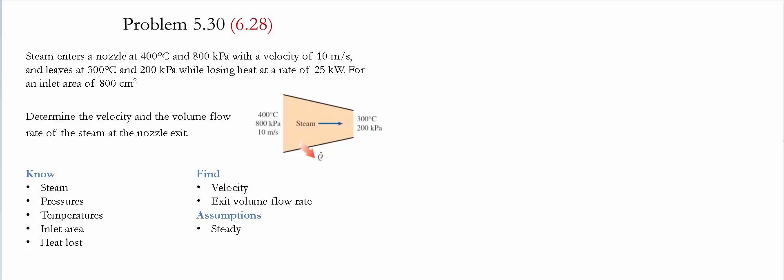Problem 5.30 or 6.28 for the given textbooks. Steam enters a nozzle at 400 celsius and 800 kilopascals with a velocity of 10 meters per second. It also leaves at 300 celsius and 200 kilopascals while losing heat at a rate of 25 kilowatts. The inlet area is 800 centimeters squared. We need to determine the velocity and the volume flow rate of the steam at the exit of the nozzle.